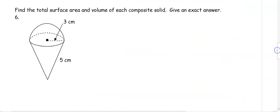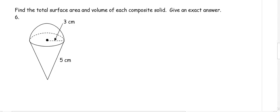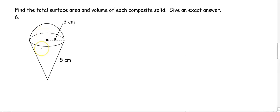Now let's look at some composite figures. A composite figure is just one or more shapes stacked together to create something. In number 6, we have what looks like an ice cream cone — a hemisphere on top of a cone — and we want to find the surface area and volume of this composite solid.